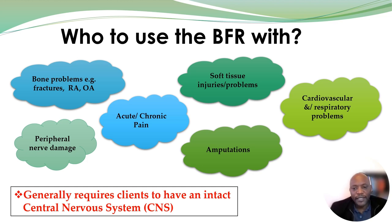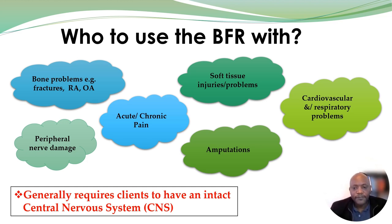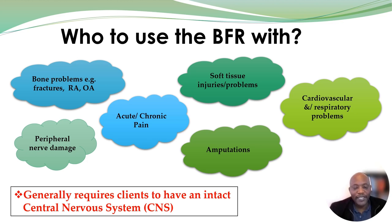Generally, when using the biomechanical frame of reference, we would expect the central nervous system of the client to be intact. The reason being, if the central nervous system is affected — for example, in traumatic brain injuries or stroke — muscle tone will be affected. If muscle tone is involved, that automatically affects joint range of motion and muscle strength, so it wouldn't be ideal to use the biomechanical frame of reference to address problems coming from abnormal muscle tone.